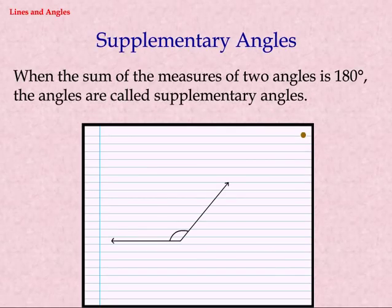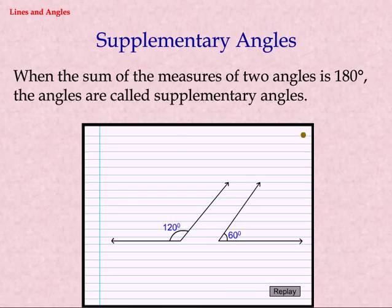Supplementary Angles. When the sum of the measures of two angles is 180 degrees, the angles are called Supplementary Angles.